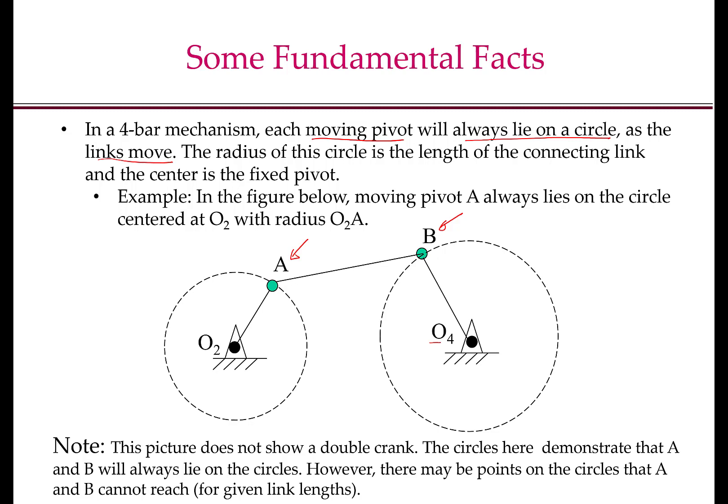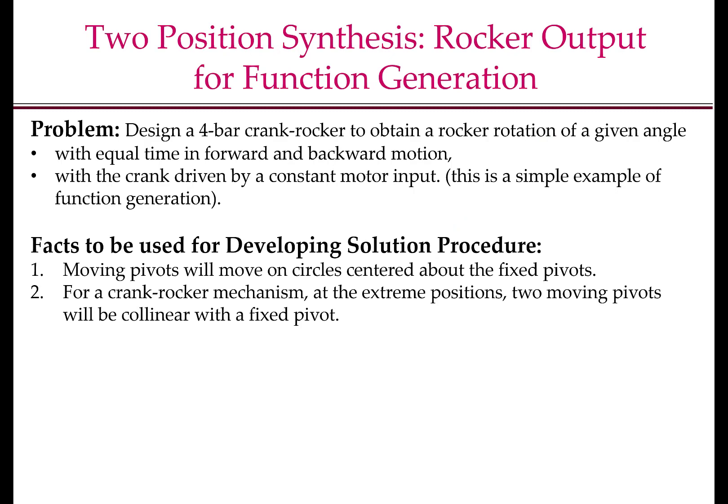Note that this picture does not show a double crank. Depending on the link lengths, there are some points on the circle that A or B may not reach. Let us look at our first canonical problem for designing a crank rocker mechanism. This is a function generation problem in which we want to design a four-bar crank rocker mechanism to obtain a rocker rotation of a given angle, we'll call this angle beta, with equal time in forward and backward motion, and with the crank driven by constant motor input.